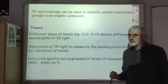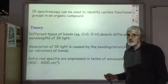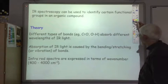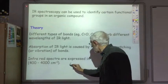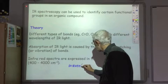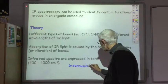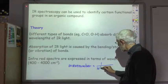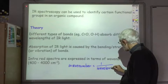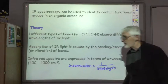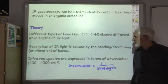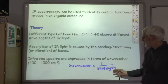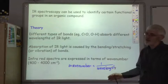This is just for historical reasons. The wave number is just the reciprocal of the wavelength, so the wave number equals one divided by the wavelength. The wavelength is in centimetres, and the wave number is per centimetre.